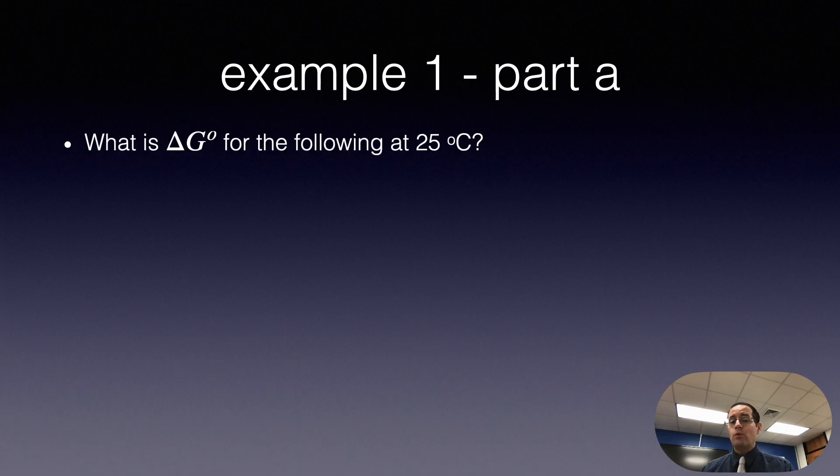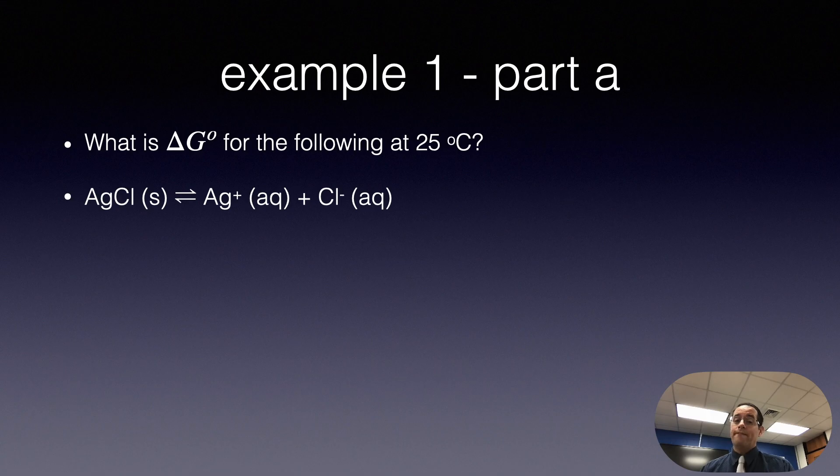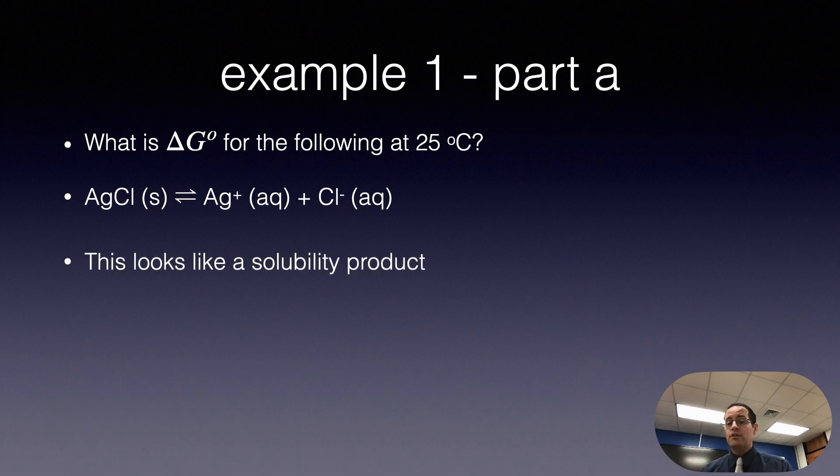So here's my first example. It's in two different parts. The first part is we want to know, what is ΔG° for the following at 25°C? AgCl solid in equilibrium with Ag⁺ aqueous and Cl⁻ aqueous. Now, it is true you could hop onto the thermodynamic tables and you can calculate ΔH for this reaction. You could calculate ΔS for this reaction. You could do all the work and you could calculate ΔG. But what I want to show you is that this looks a lot like a solubility product, and we can look up the Ksp value in the table. It's 1.6 times 10 to the minus 10. I believe this is appendix J. I'll provide a link in the video description.